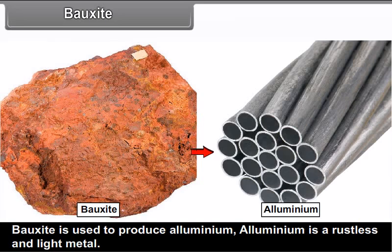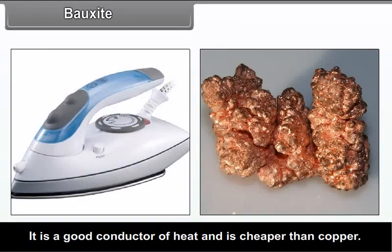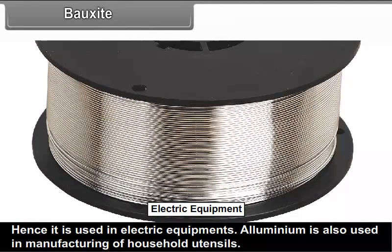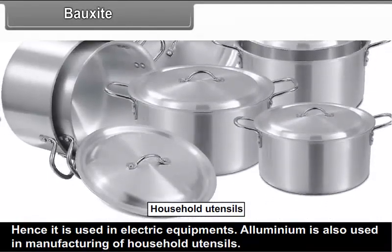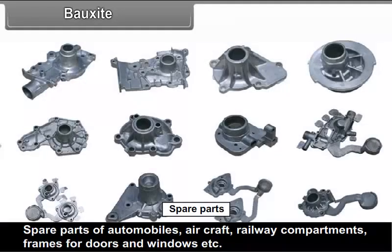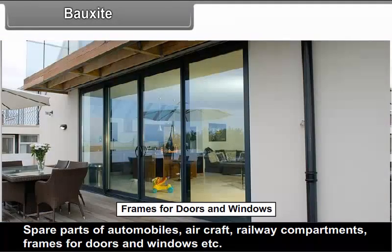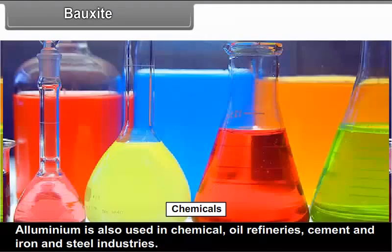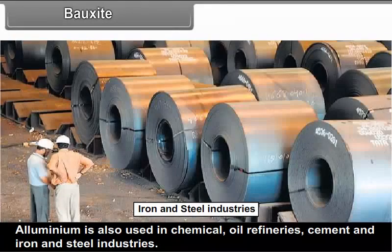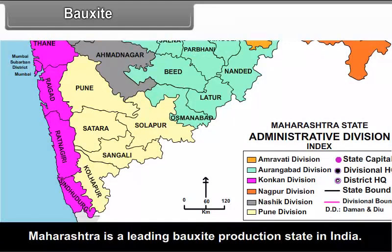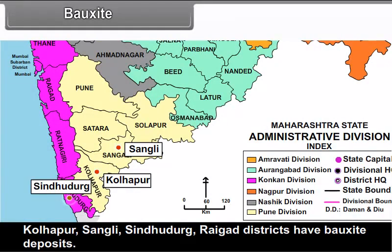Bauxite: Bauxite is used to produce aluminium. Aluminium is a rustless and light metal. It is a good conductor of heat and is cheaper than copper, hence it is used in electric equipment. Aluminium is also used in manufacturing of household utensils, spare parts of automobiles, aircrafts, railway compartments, frames for doors and windows, etc. Aluminium is also used in chemical, oil refinery, cement and iron and steel industries. Maharashtra is the leading bauxite producing state in India. Kolhapur, Sangli, Sindhudurg and Raigad districts have bauxite deposits.